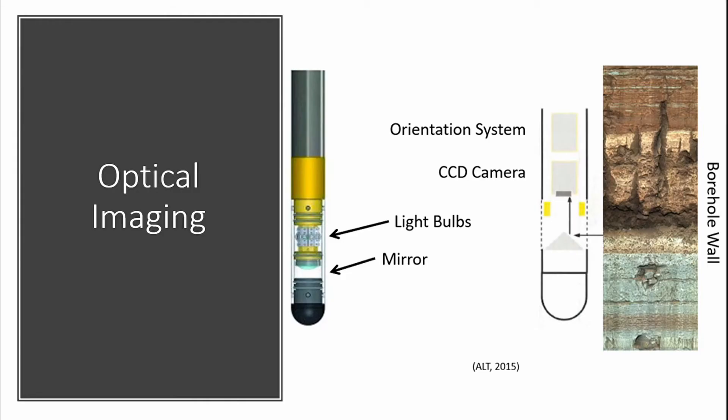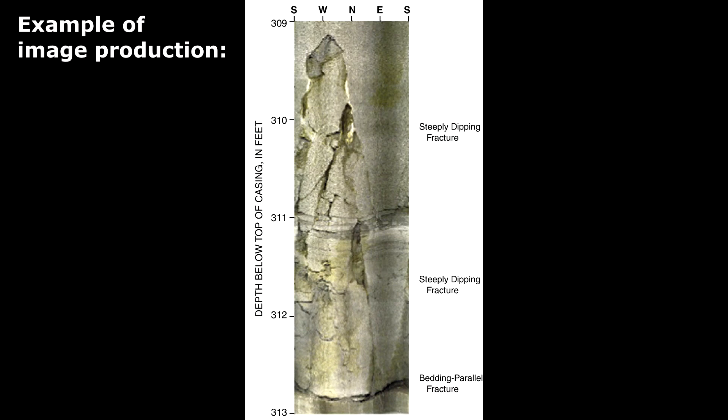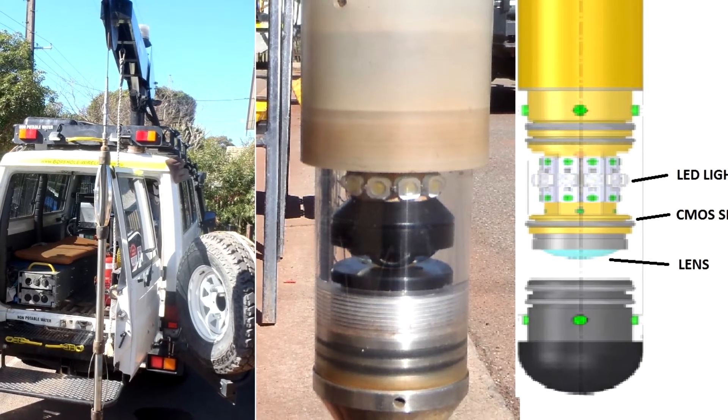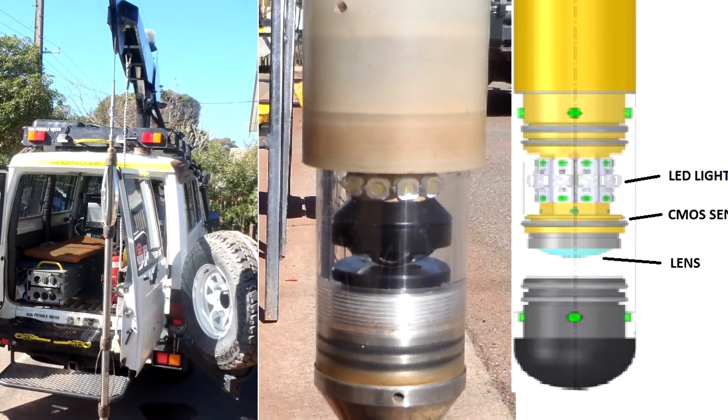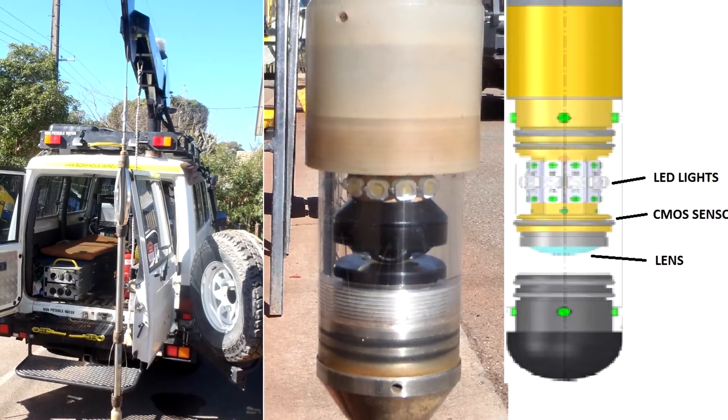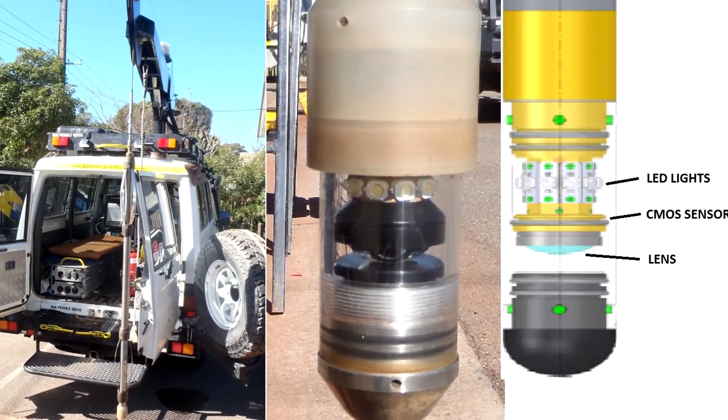Optical imaging makes use of a ring light, high-resolution charged coupled device, or CCD camera, and a mirror that produce a two-dimensional colored image of surrounding formations. These instruments require a transparent fluid to produce quality images and are often used alongside acoustic scanners. They provide important information used for interpreting both hydraulic and water quality data.